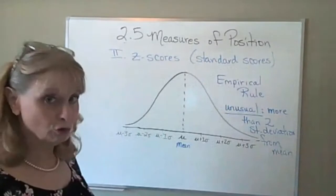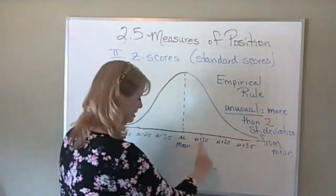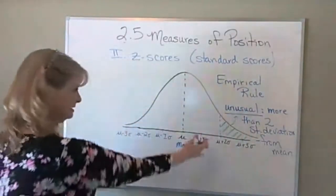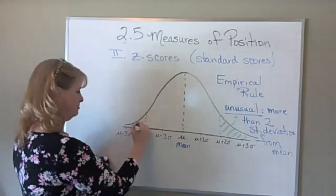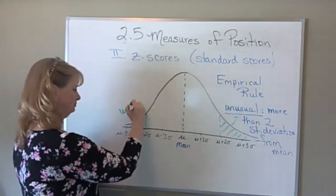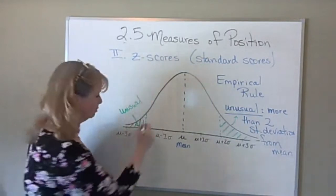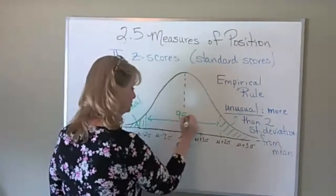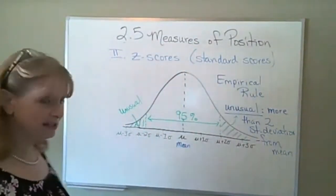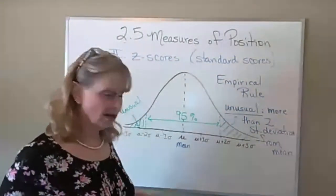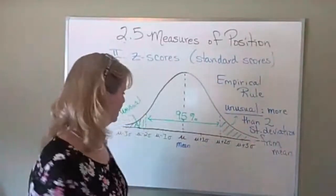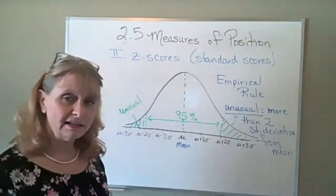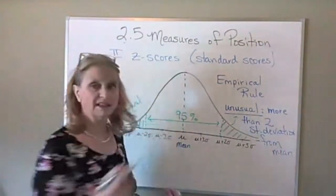Here's why — let's show where those unusual values are. Here's the mean, and here's two standard deviations above the mean, so anything that falls out here would be unusual. Two standard deviations below the mean is also unusual. The percentage of data values within two standard deviations of the mean is 95%, so basically the outside 5% — 2.5% on each side — we're going to call unusual, statistically speaking.